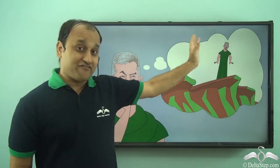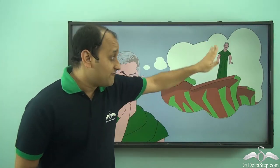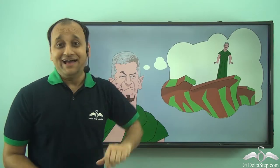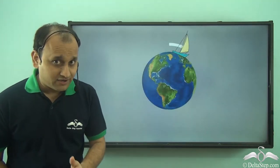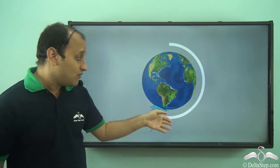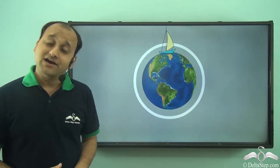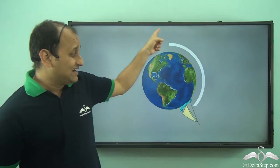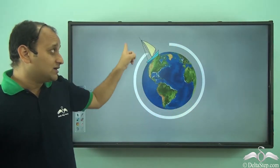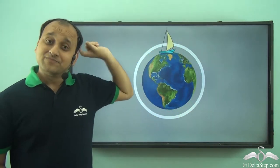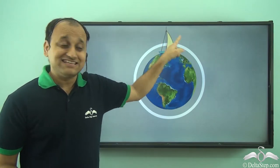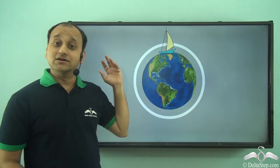In ancient times, people believed that the earth was flat and if they traveled too far, they would fall down from the edge. But there was a person called Ferdinand Magellan who proved that the earth is round. He traveled round the earth and reached the same place from where he started, proving that the earth is round.